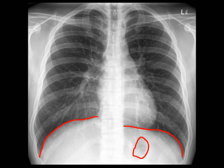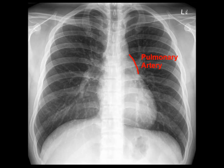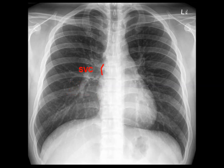Next we will look at the borders of the heart and major blood vessels, going clockwise from top to bottom. First you have the subclavian artery, then the aortic arch, the pulmonary artery, a small bit of the left atrium, the left ventricle, the right atrium, the superior vena cava, and the ascending aorta.